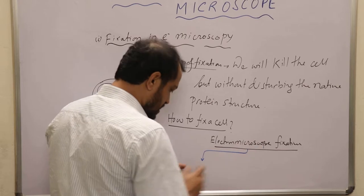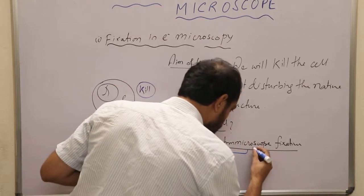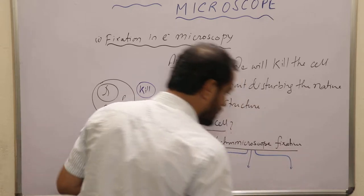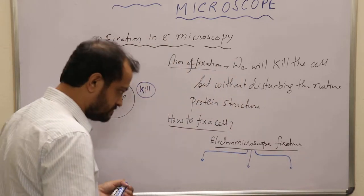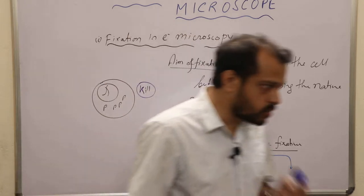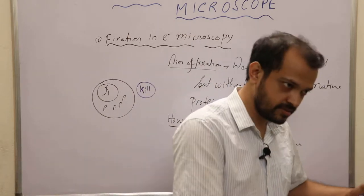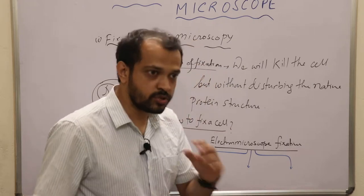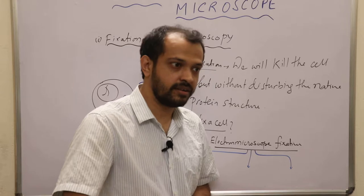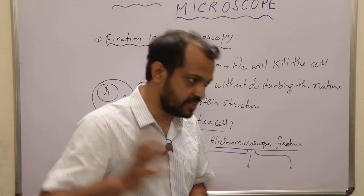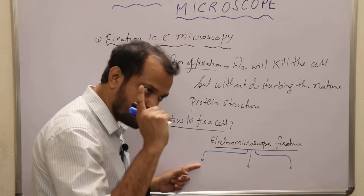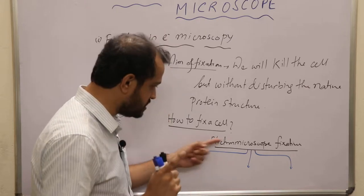Electron microscope fixatives are basically of three types. We will be discussing the most common one last, because the most commonly used fixative was actually discovered in the late 1970s. We will discuss first the most early fixative used in electron microscopy.